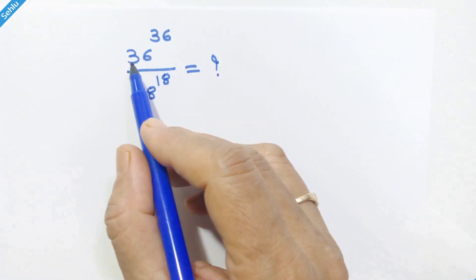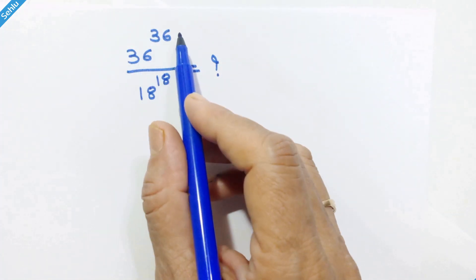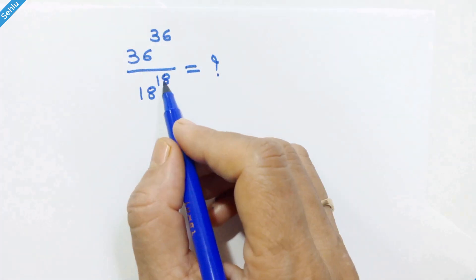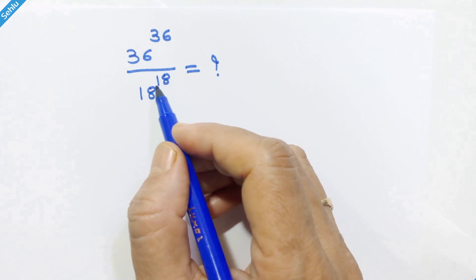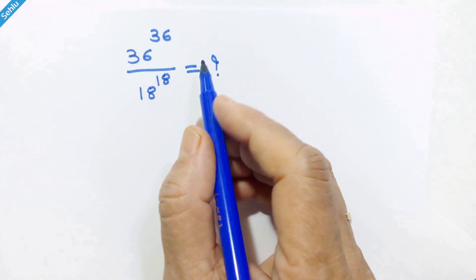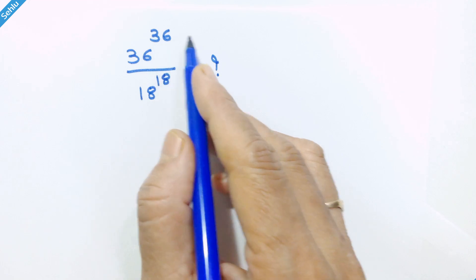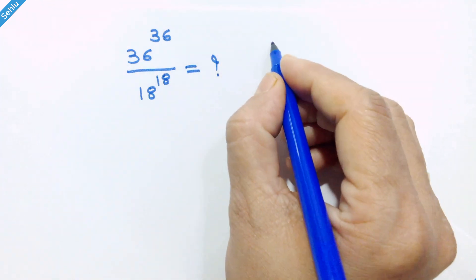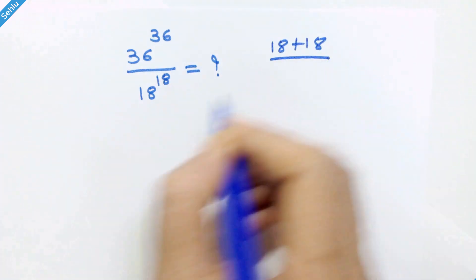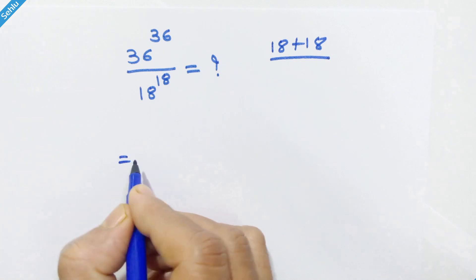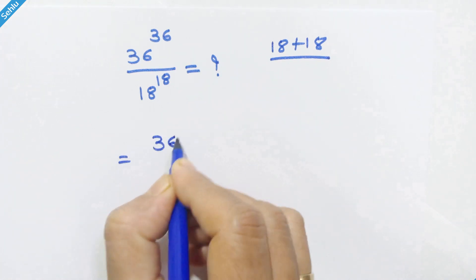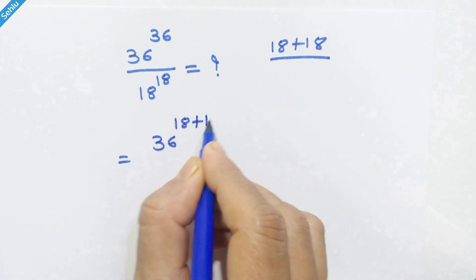Hello friends, here we have 36 raised to 36 upon 18 raised to 18. Now how do we simplify this expression? We will split this exponent into 18 plus 18, so our expression will be 36 raised to 18 plus 18 over 18 raised to 18.